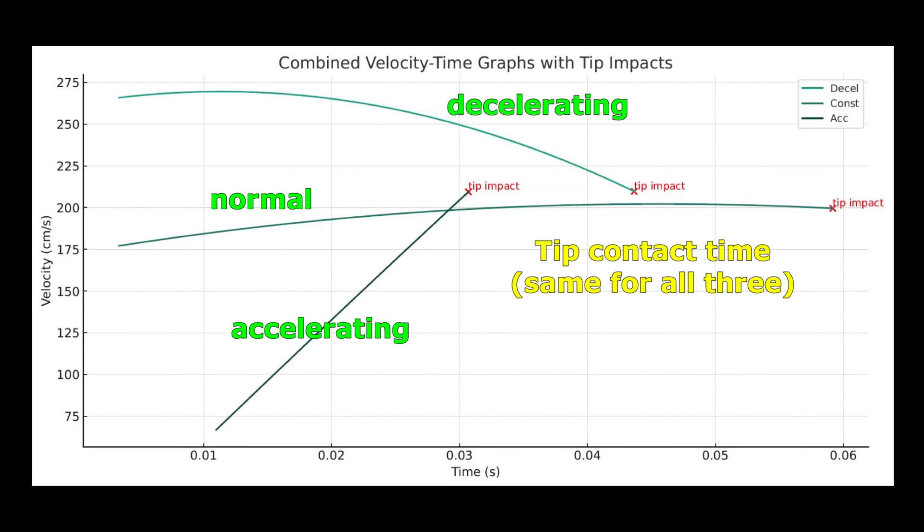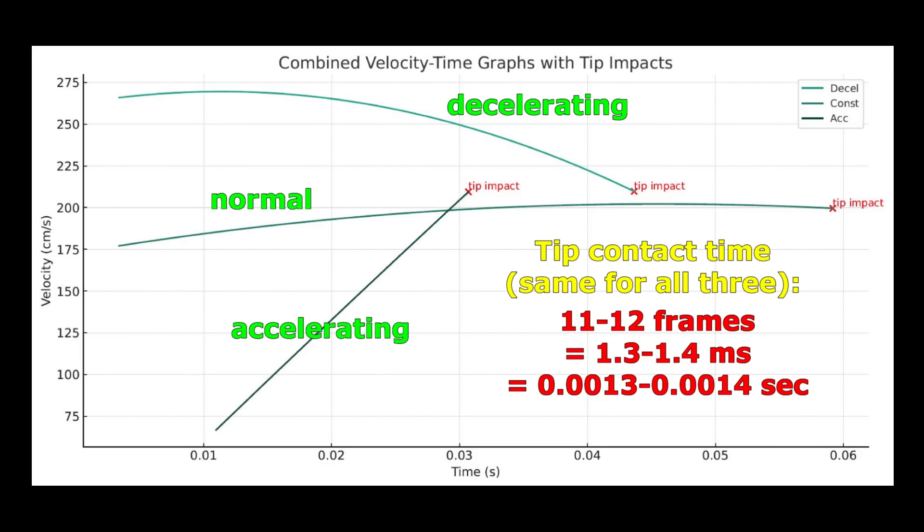There was no measurable difference among the three contact times. The tip was in contact with the ball between 11 and 12 video frames with each stroke. This corresponds to a time interval of 1.3 to 1.4 thousandths of a second. The tip contact time was not prolonged by cue acceleration, and it was not diminished by cue deceleration.